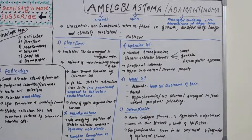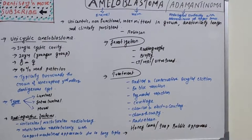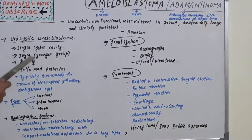The next variety is unicystic ameloblastoma — seen in the clinical classification alongside multi-cystic. Multi-cystic is very common; unicystic is less common. Unicystic ameloblastoma has a single cystic cavity, and is seen in a younger age group — around 20 years.